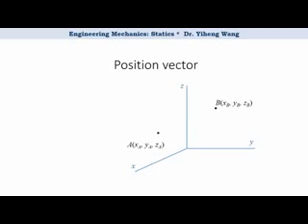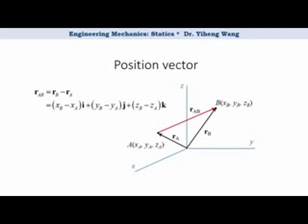and if you want to find the relative position of point B relative to point A, this relative position can be expressed by a vector r_AB, that starts from point A and ends on point B, and r_AB equals to position vector r_B minus position vector r_A.